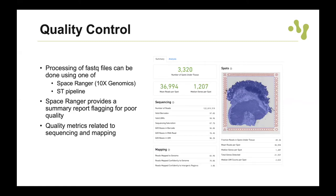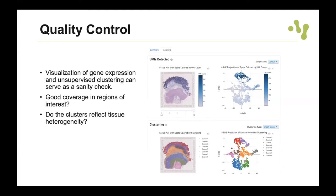There is also an analysis tab in the Space Ranger report, useful as a sanity check. You get a spatial visualization of transcripts on the tissue and basic unsupervised clustering results. This can serve as a quality check to confirm clusters reflect tissue heterogeneity and that you capture many transcripts where expected.